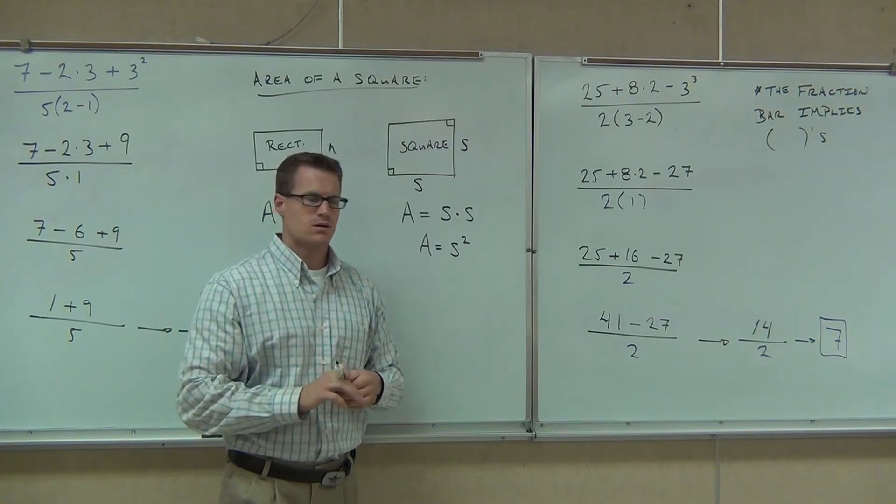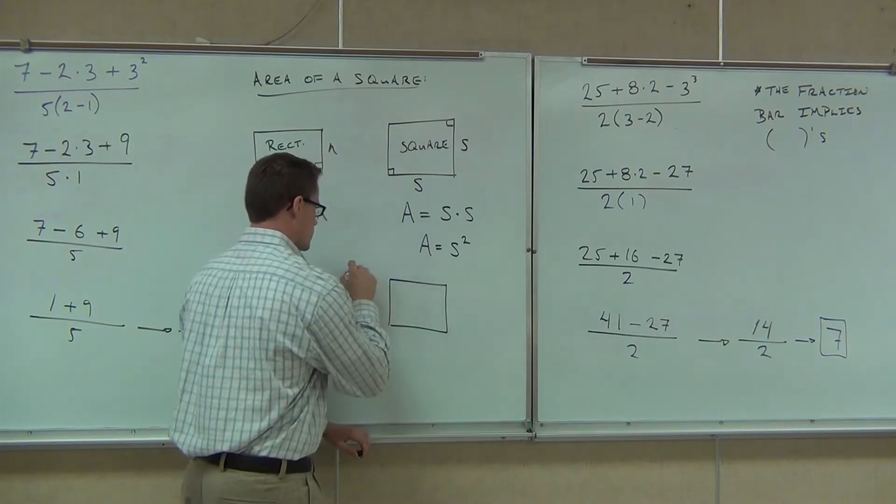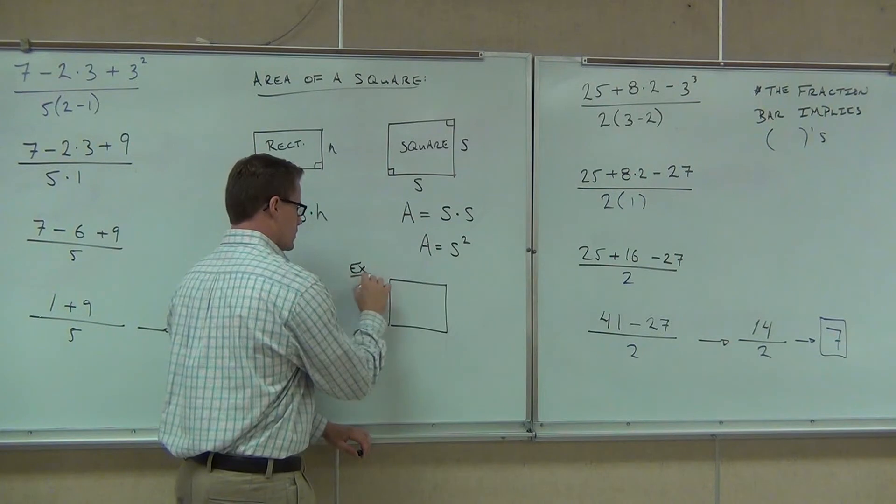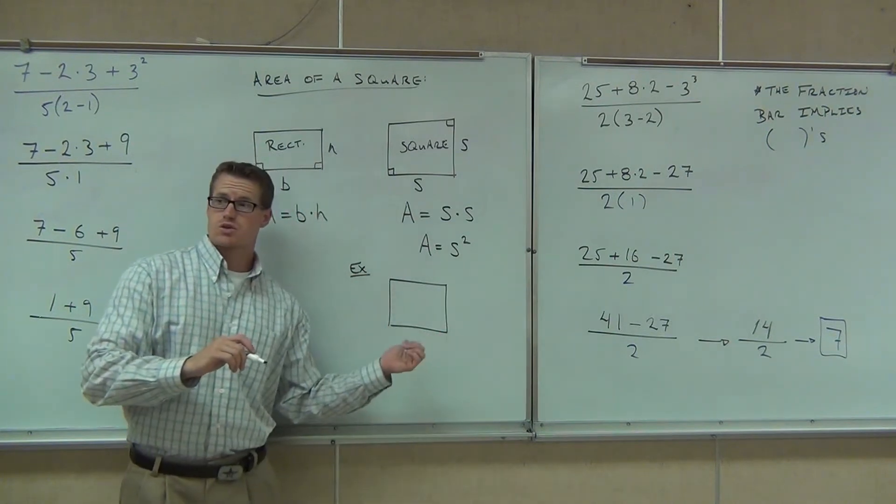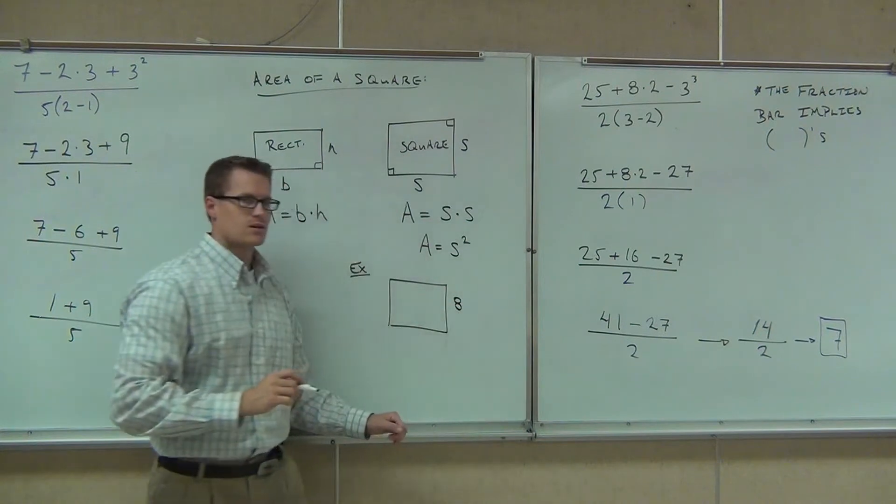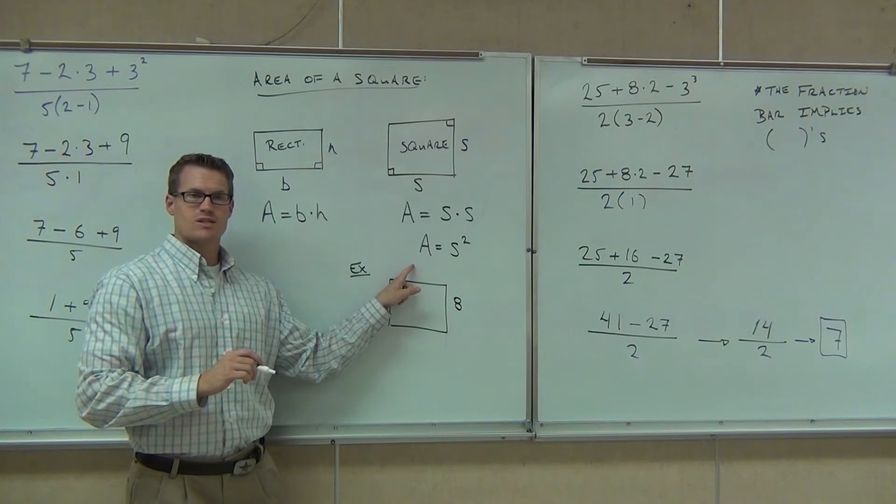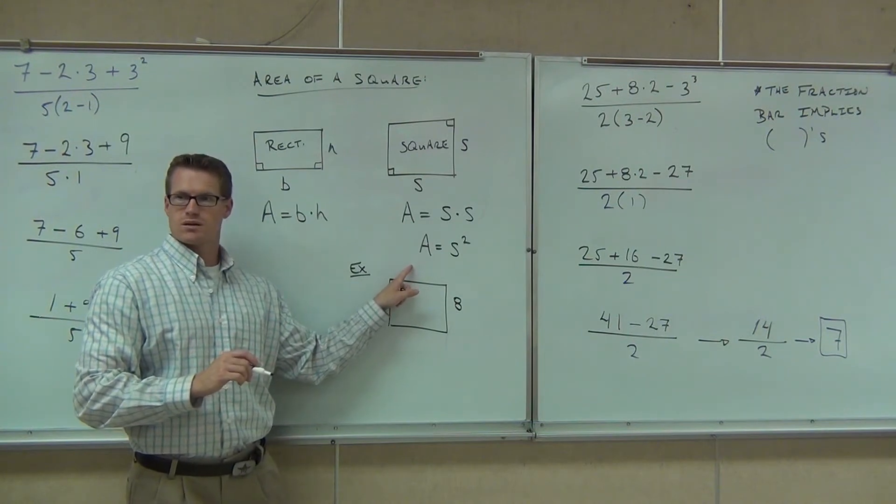Do you need two sides if it's a square? It's a square. Say it's eight inches. I'm going to say this is a square. You got me? And one side is eight inches. How much is this side? Eight inches. This side? Eight inches. This side? Eight. So how many sides do you need if I tell you it's a square? One. Just one.